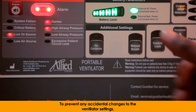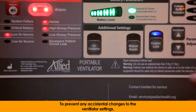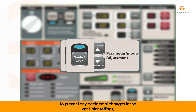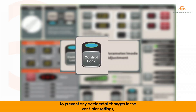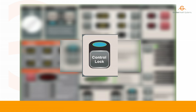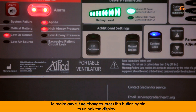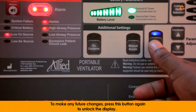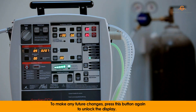To prevent any accidental changes to the ventilator settings, lock the front panel controls by pressing the Control Lock button, ensuring the blue light is illuminated. To make any future changes, press this button again to unlock the display.